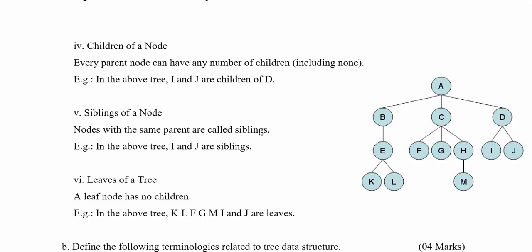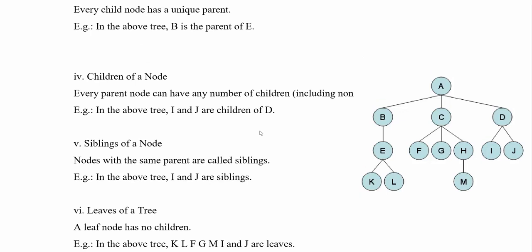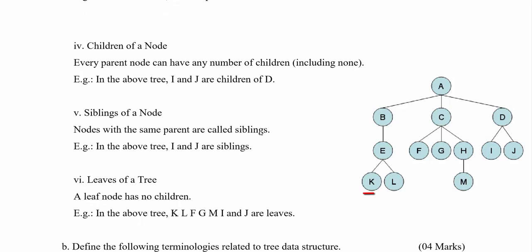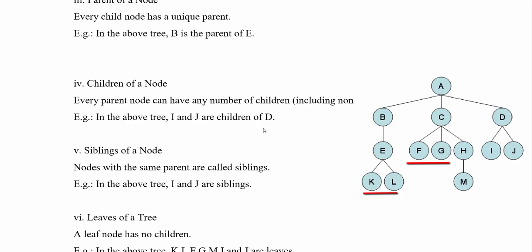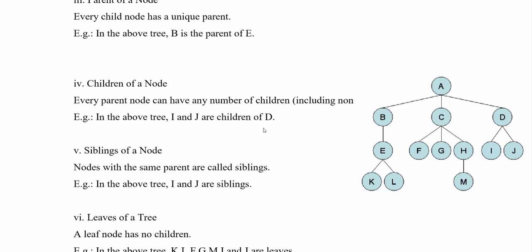For a leaf of a tree, we have nodes with no children. Therefore, the bottom-line nodes of this tree — K, L — and in this branch we can consider F and G, for the other branch we can consider H, and from the other section we can take I and J. All those are the leaf nodes because if we consider those nodes, we cannot see any children thereafter.